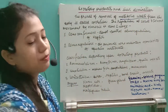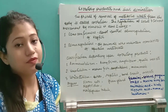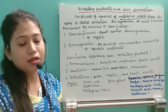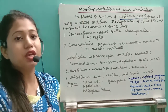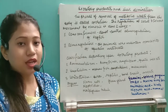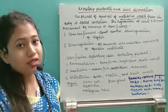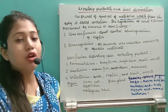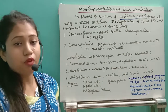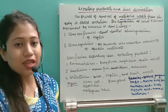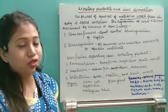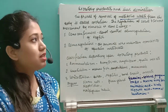Whenever our body breaks down protein, it produces ammonia. That ammonia undergoes a cycle called the urea cycle, which leads to the production of urea. That urea is filtered out from the blood by the kidneys, and then from the excretory organs, this urea is removed along with water.